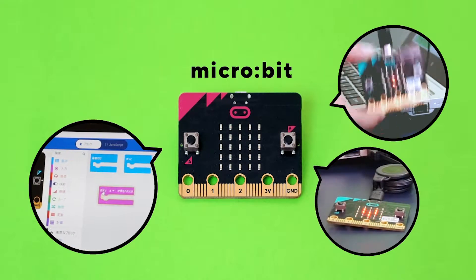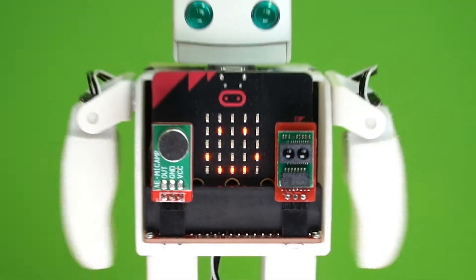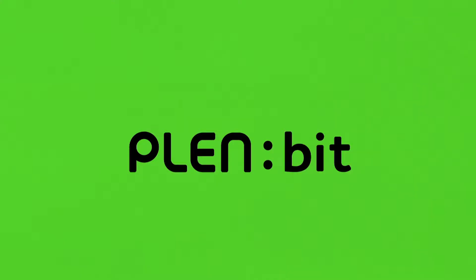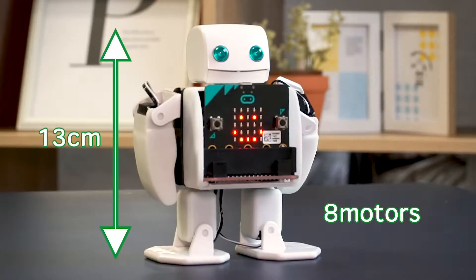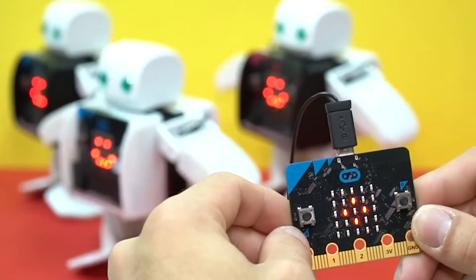The MicroBit is an educational single-board chip which the PlenBit uses as its brain. The PlenBit is a small robot only 13 centimeters tall with eight movable joints allowing a multitude of movement.